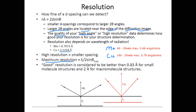In structure solution, the first step uses low-angle (low 2-theta) data to solve the structure and get a starting model. Then the high 2-theta data — the high-resolution data — is used to refine the structure model. Without sufficient high-angle data, you may solve the structure but won't be able to refine it to an acceptable model. For small molecules, 0.83 Å resolution is the target; for macromolecules such as proteins, about 2 Å resolution is typical.